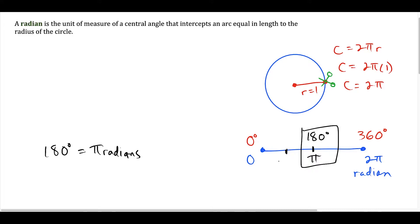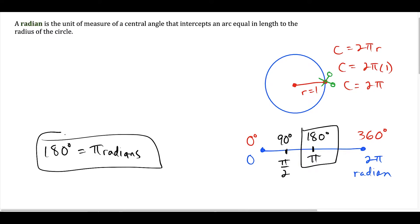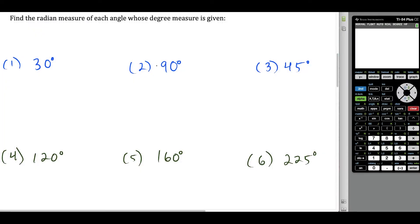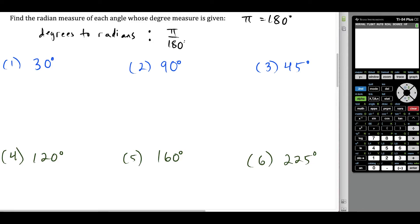We could cut this in half again and call this π over 2, which would be 90 degrees — half of 180. But that key relationship, 180 degrees = π radians, is what we're going to use for all of our conversions. For the first set of questions, we want to convert from degrees to radians, so we're going to multiply by π over 180.